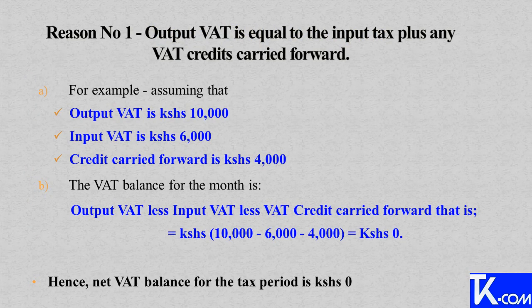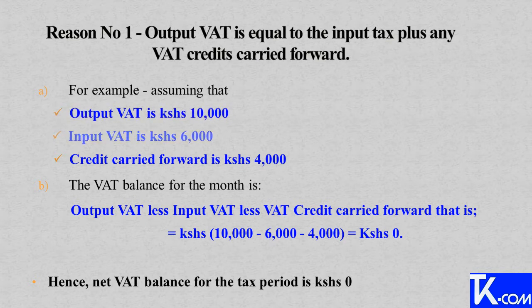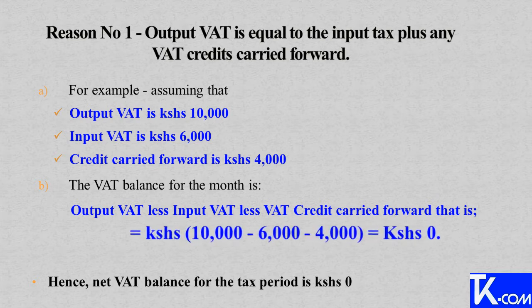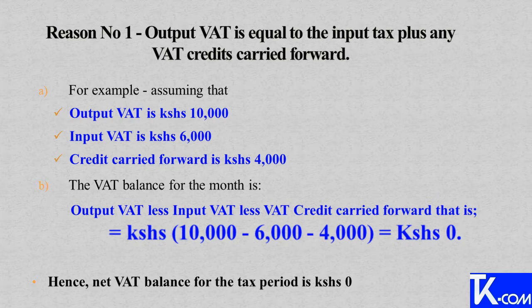Reason number one: output tax is equal to the input tax plus any VAT credit carried forward. For example, assuming that the output VAT is Kenya Shillings 10,000, the input VAT is Kenya Shillings 6,000, and the credit carried forward is Kenya Shillings 4,000. The VAT balance for the month is output VAT less input VAT less VAT credit carried forward, which gives us 10,000 minus 6,000 minus 4,000, which is equal to zero. Hence, the net VAT balance for the tax period is zero.